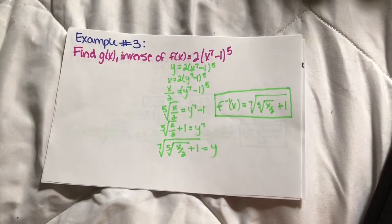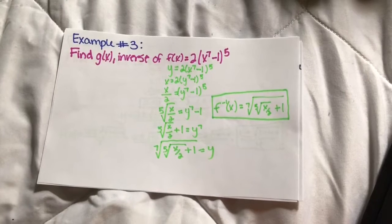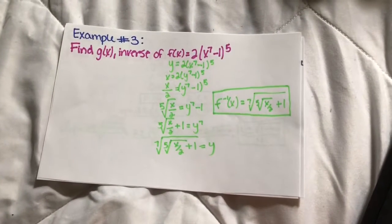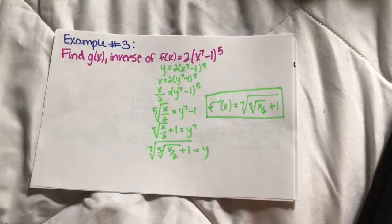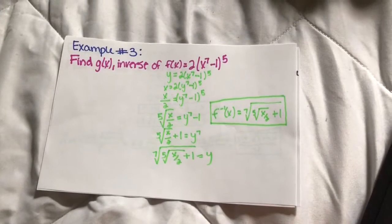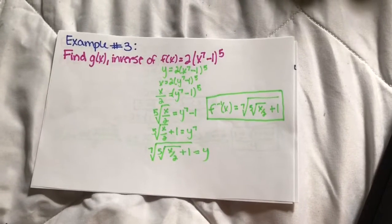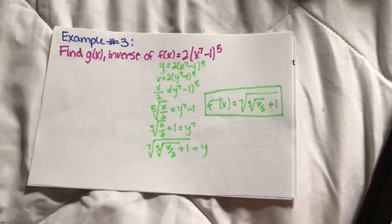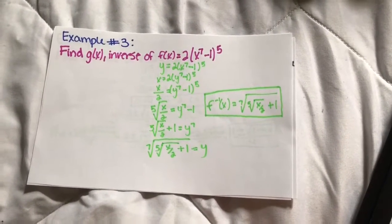Add 1 to the other side to get the 5th root of (x/2) plus 1 equals y⁷. To get rid of the 7th power, you have to 7th root the entire equation, which comes out to be the 7th root of the 5th root of (x/2) plus 1, which is the inverse of f(x).